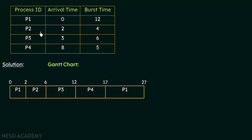At time 2, P2 arrives. The burst time of P2 is 4 milliseconds, which is less than P1's remaining burst time of 12 milliseconds. So P2 has to be given the CPU. P1 will be preempted — the CPU is taken away from P1 and given to P2 because it has a shorter burst time. At the second millisecond, P2 gets the CPU and P1 is taken out.